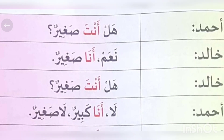Ahmad: Hal anta sagheer? — Are you small? Khalid: Naam, ana sagheer — Yes, I am small. Hal anta sagheer? — Are you small? Ahmad: La, ana kabir, la sagheer — No, I am big, not small.